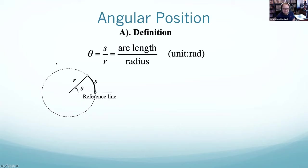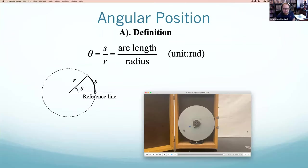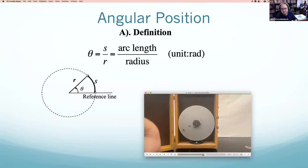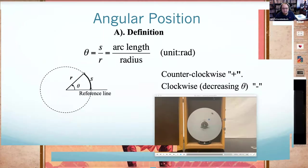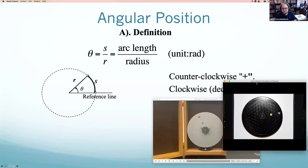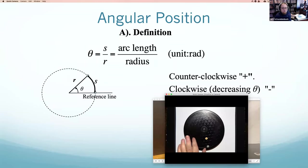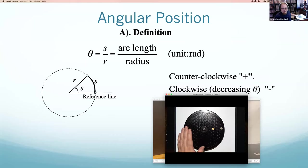Just like right is positive and left is negative in linear physics, we have a standard in rotational physics. Anything moving counterclockwise is moving in the positive direction. Anything moving clockwise is moving in the negative direction. The reason for that has to do with something called a cross product and the right-hand rule, which I'll talk about next chapter. For now, just know counterclockwise is positive, clockwise is negative.